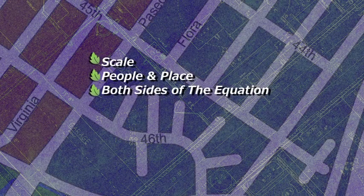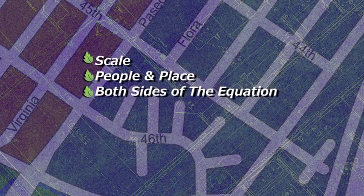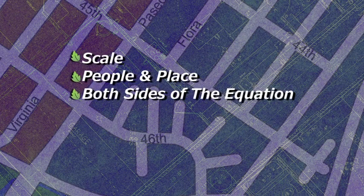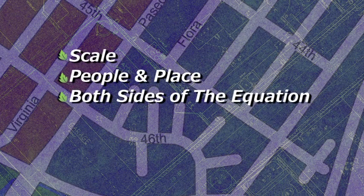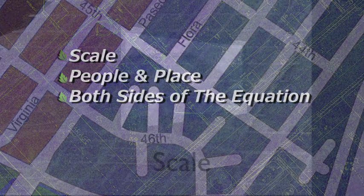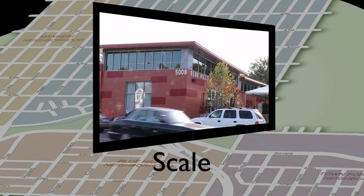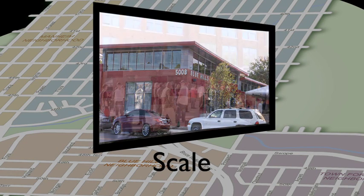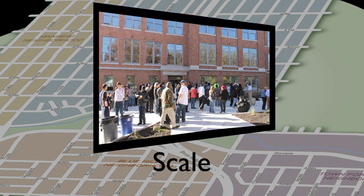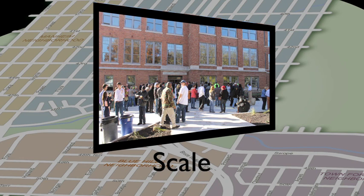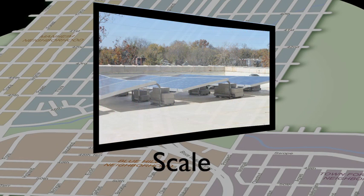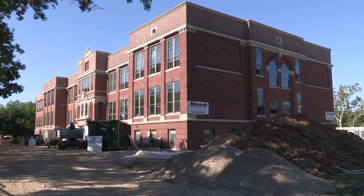The Green Impact Zone strategy is built on three fundamental interrelated premises: scale, people and place, and balancing both sides of the equation. It is imperative to work at a scale large enough to bring about significant change in the community, but targeted to specific projects that can serve as catalysts for further progress. There are several key catalytic success stories in the Green Impact Zone.